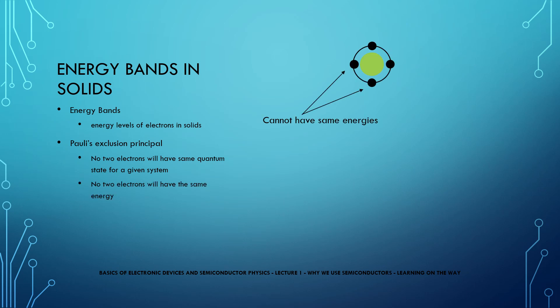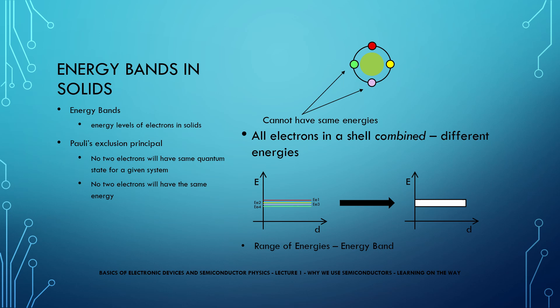In simple words it means that no two electrons will have the same energy. As a result, all electrons in an outermost shell combined will have different energies which makes it a range of energies called a band. Hence the electrons of the outermost shell is called the valence band as they represent the energies of valence electrons.